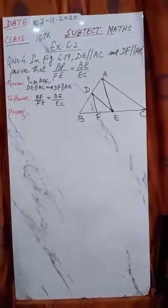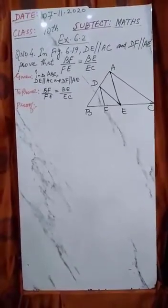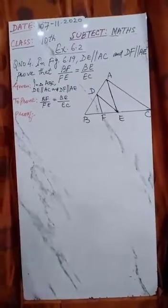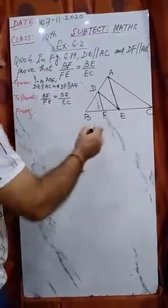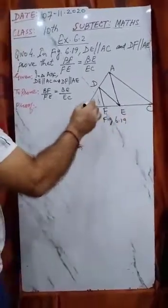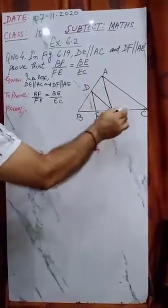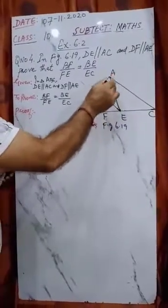This question is again based on the concept of BPT, that is basic proportionality theorem. So here we have a question. This is the figure given to you in your textbook, figure 6.19. DE is parallel to AC and DF is parallel to AE.